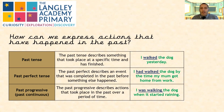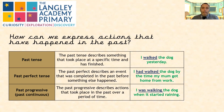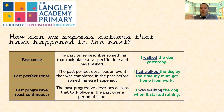Past perfect tense: the past perfect describes an event that was completed in the past before something else happened. For example, 'I had walked the dog by the time my mum got home from work.' The something in the past is that I'd walked the dog, and the something else that happened is my mum got home from work. Past progressive: the past progressive describes actions that took place in the past over a period of time. For example, 'I was walking the dog when it started raining' — you were walking the dog while it was raining, but it all happened in the past.